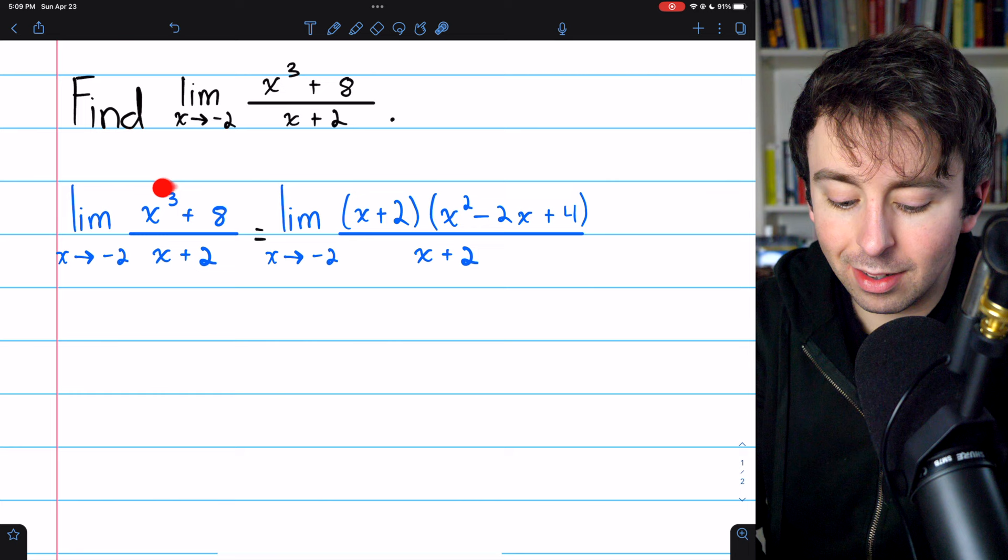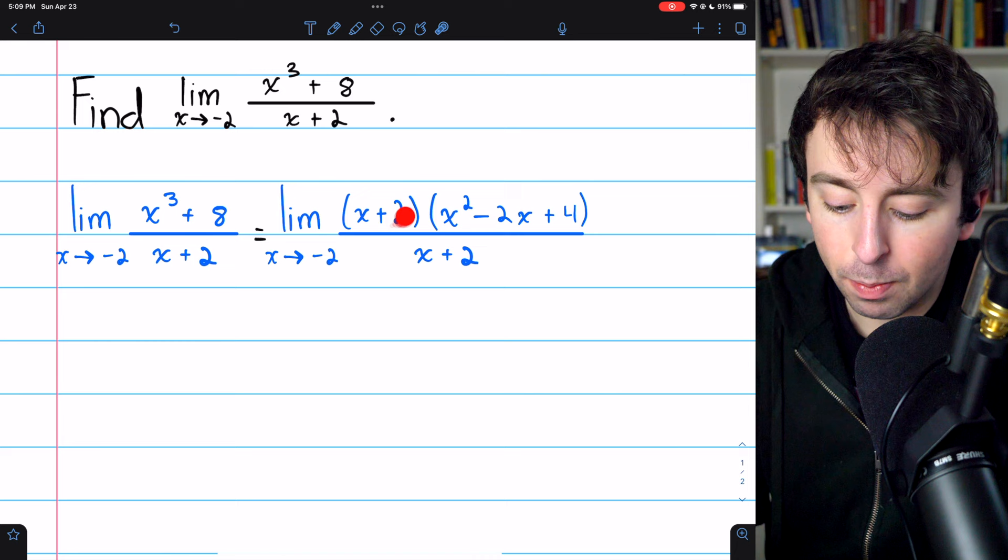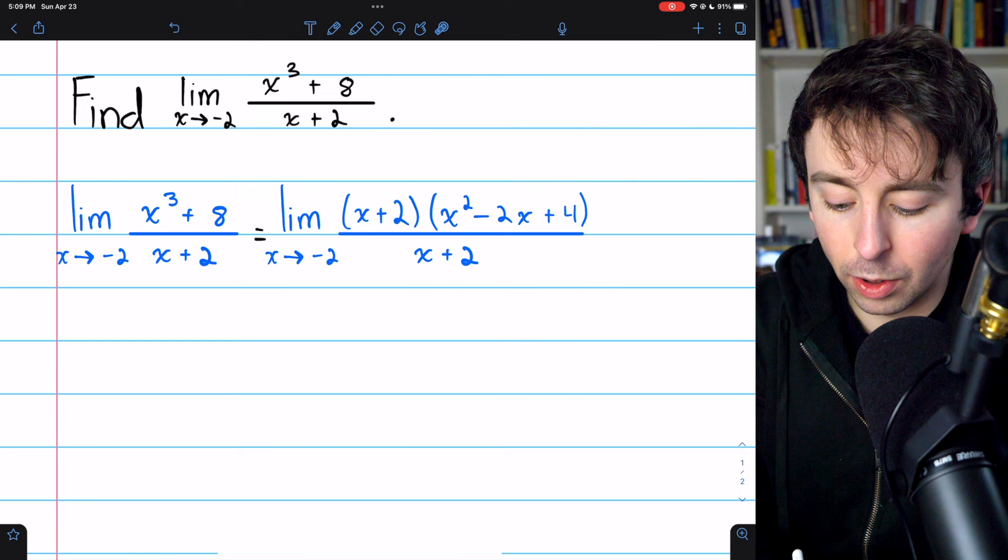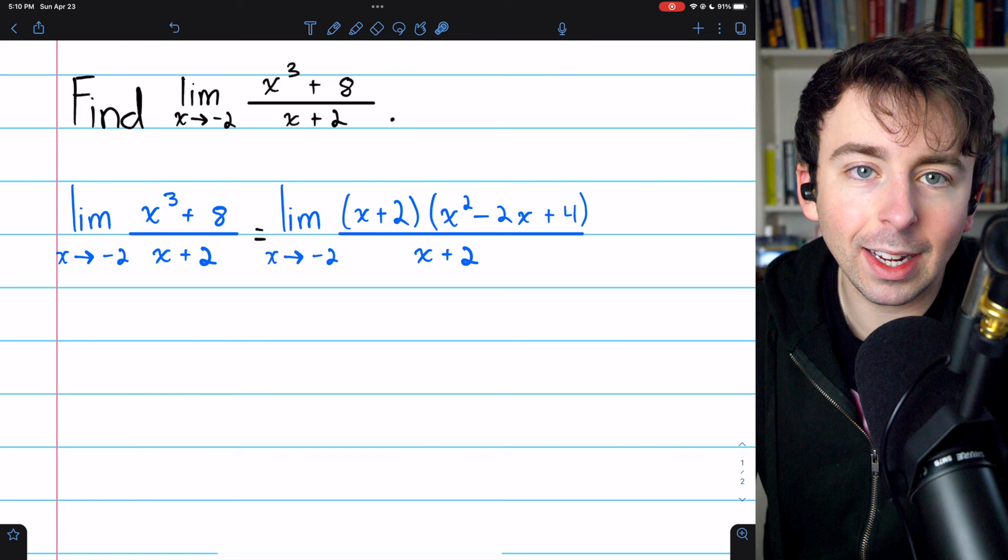When we do that, we get x plus two multiplied by x squared minus two x plus four. So this is equal to this. Now we see the x plus two in the numerator can cancel out with that problematic x plus two in the denominator.